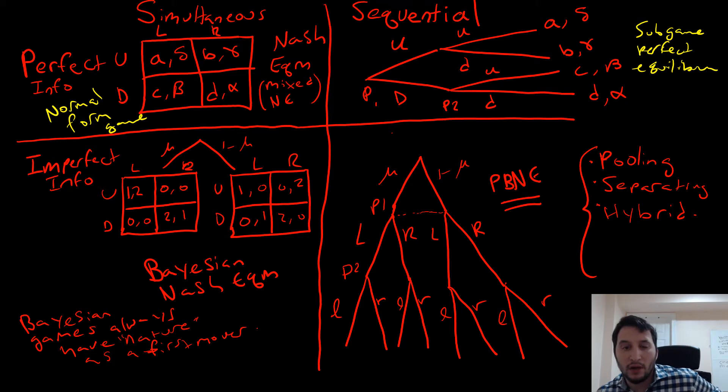We can write this extensive form game as a simultaneous move game by putting in this thing known as an information set, which I'm denoting by a dotted line. Some people put a circle around this. For player two, it means thinking about what possible events could have happened - those possible events could have been player one moving down or player one moving up. Without this information set, player one knows for certain at this node what happened, whether it was up or down.